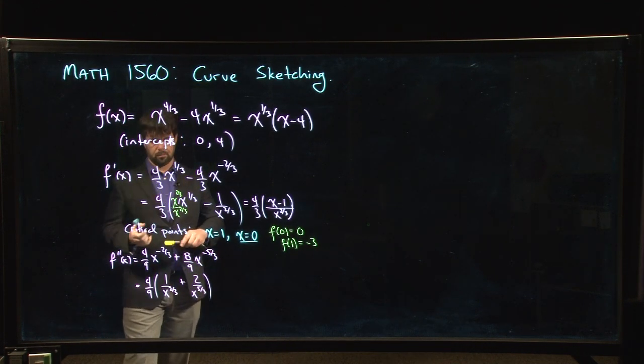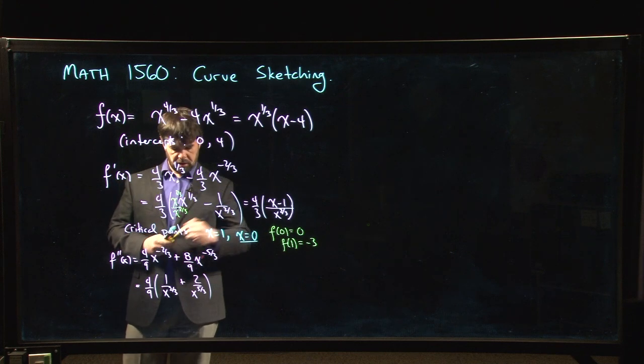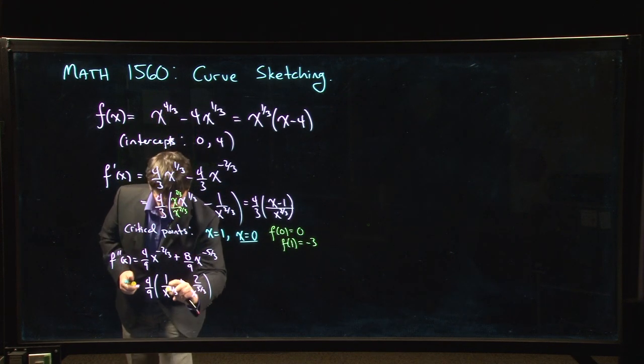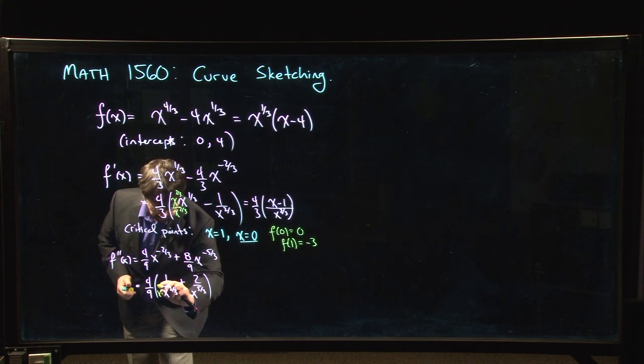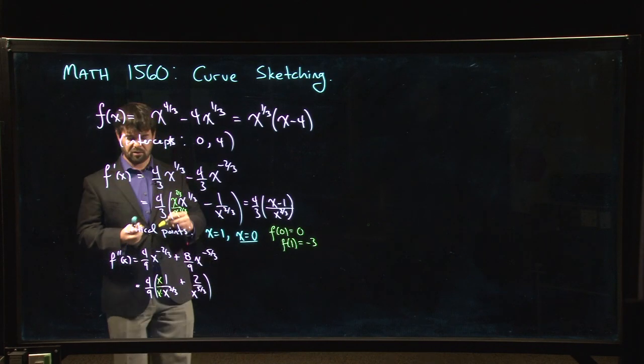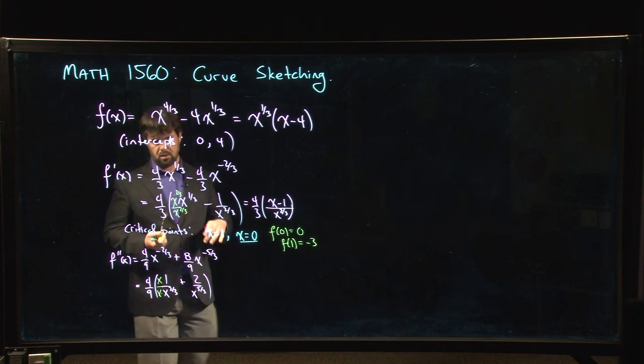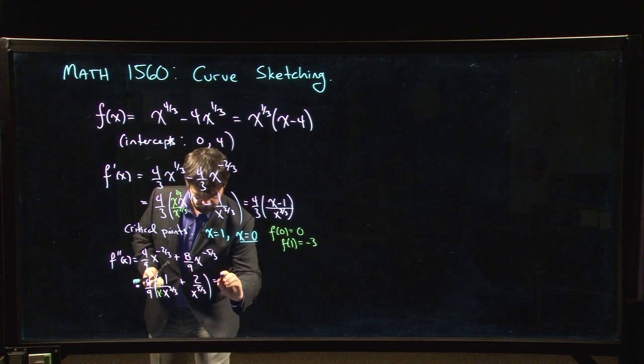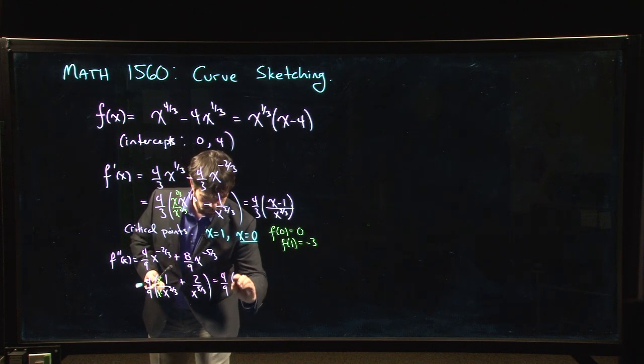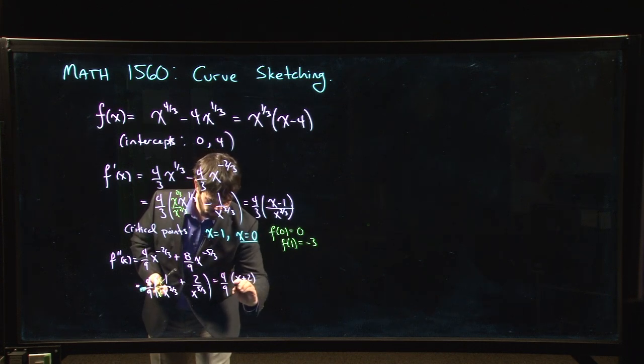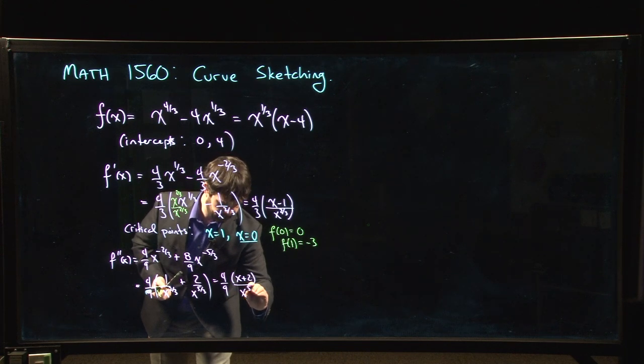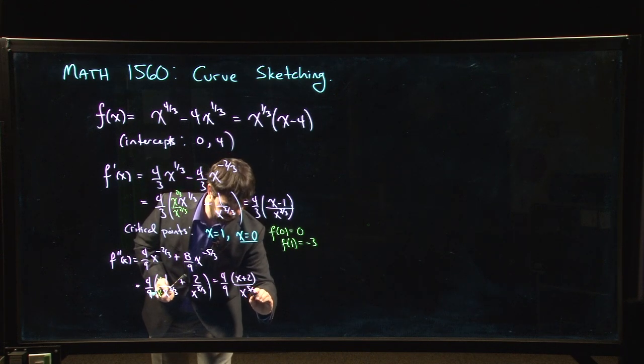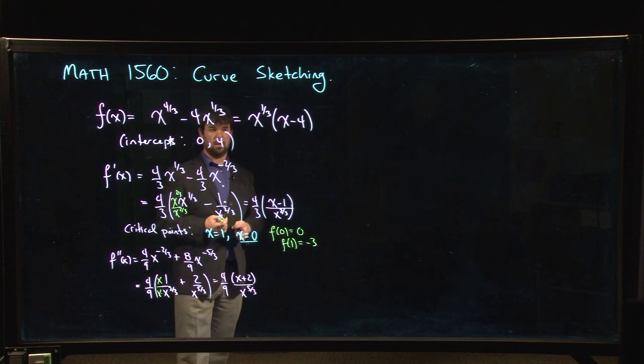Okay, so we can factor out 4 over 9 and then I'm left with 1 over x to the 2 thirds plus 2 over x to the 5 thirds. And once again, I can do the same kind of trick except this time I'm going to multiply by x. So I'm going to multiply by x to the 2 thirds plus x over x to the 2 thirds. And then I get 4 over 9 x plus 2 over x to the 5 over 3.